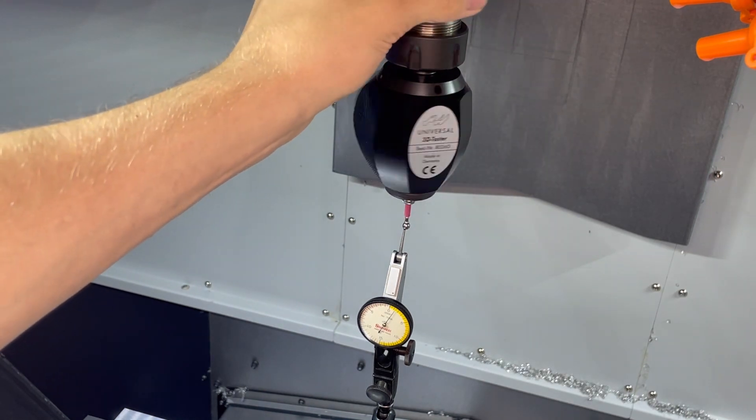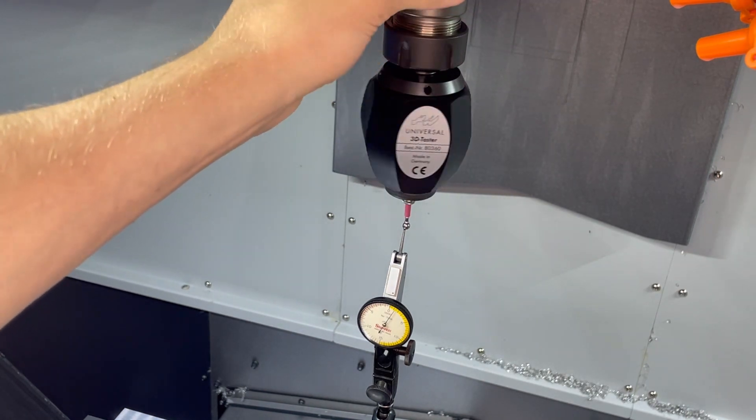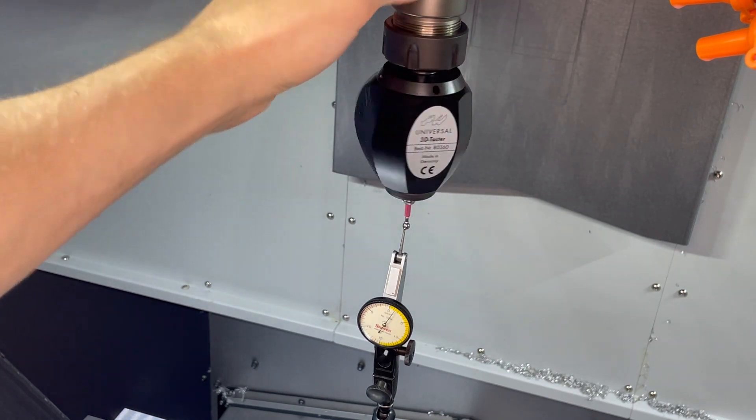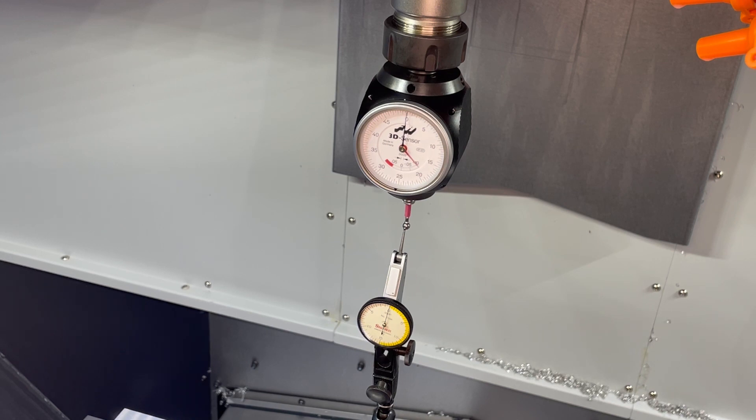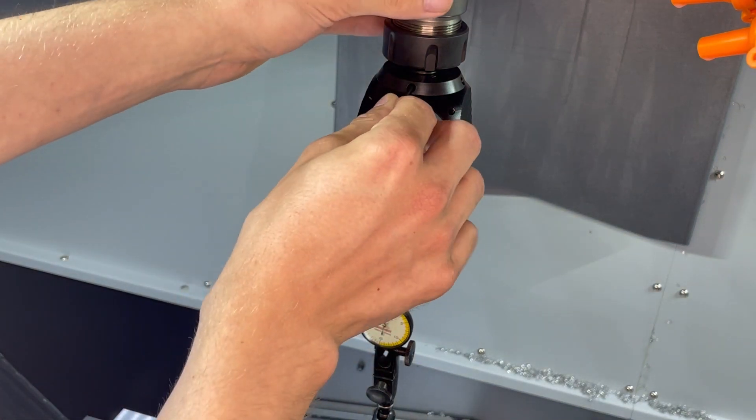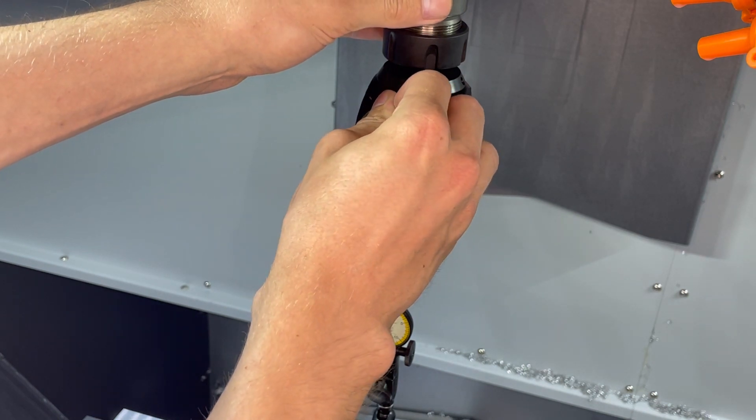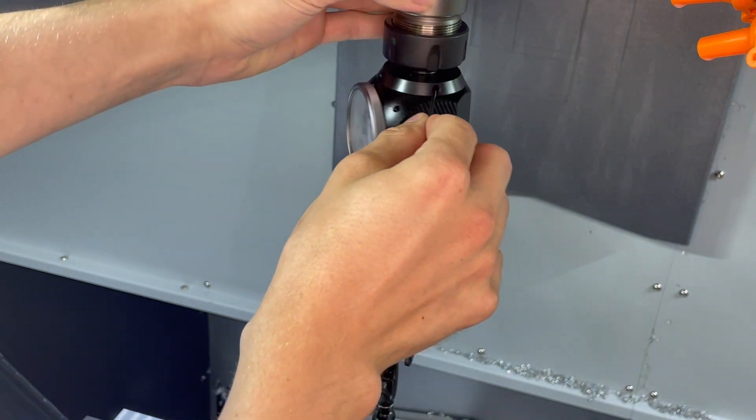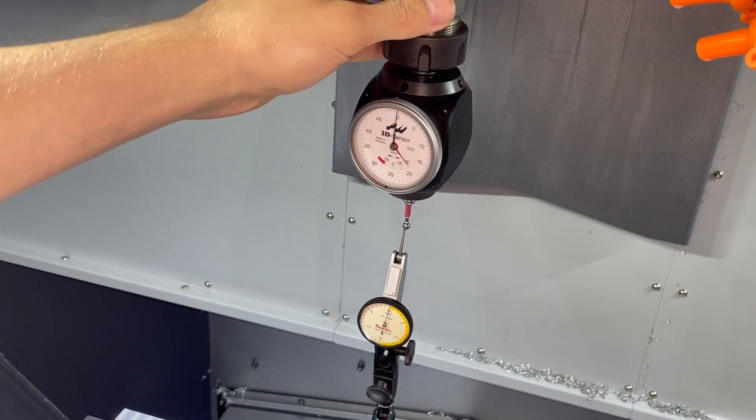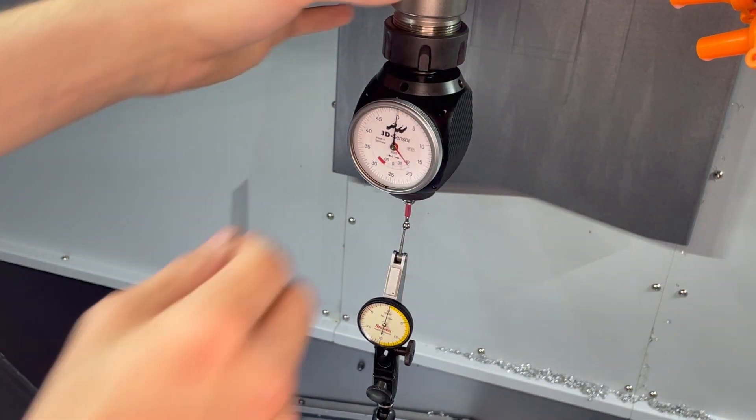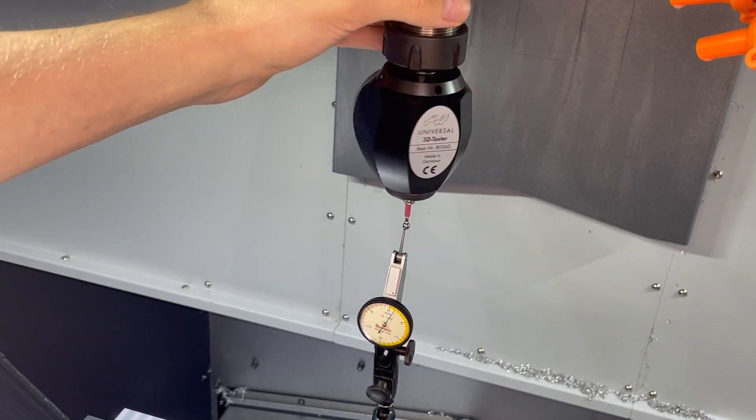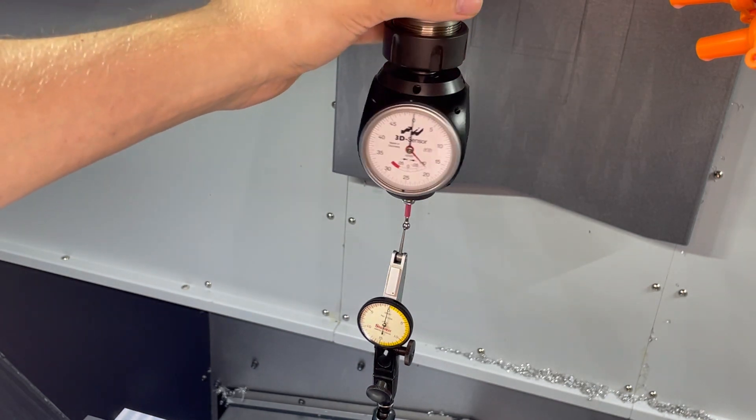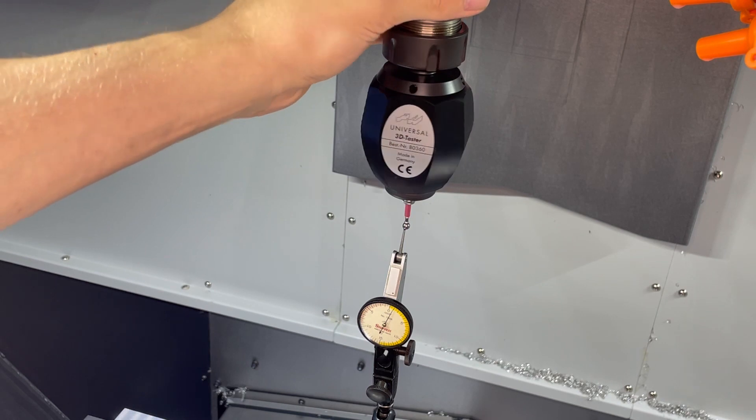As you can see the indicator is moving about a thousandth and a half to two thousandths of an inch. So that's about our TIR or total indicated reading. To fix that it works similar to a four jaw chuck on a manual lathe with independent jaws.